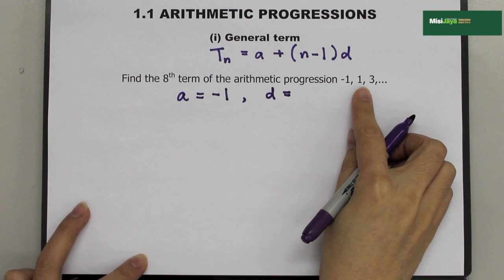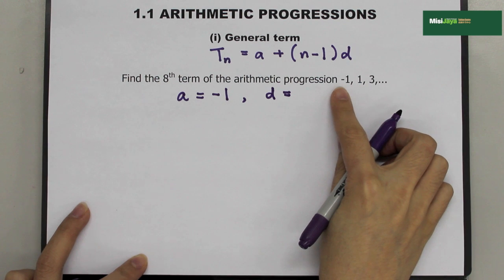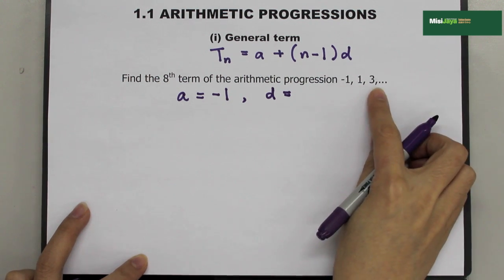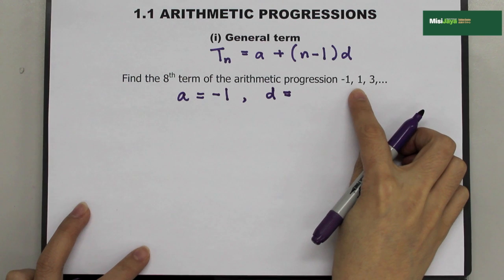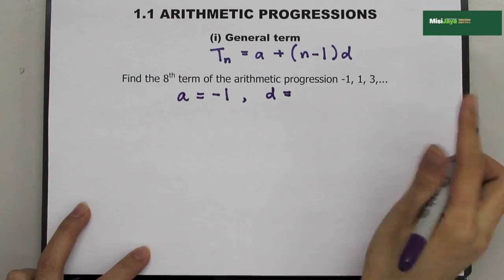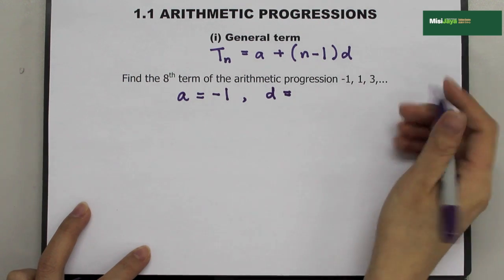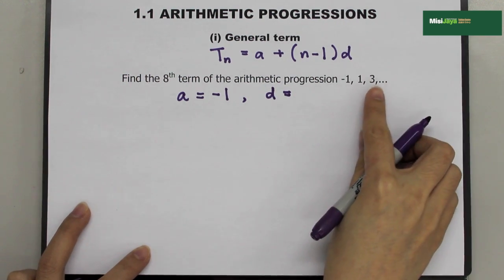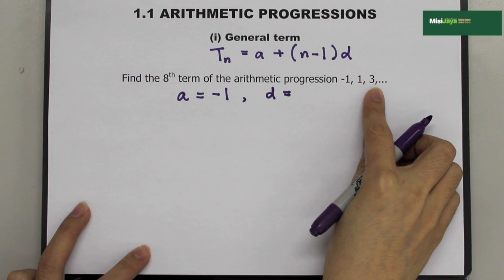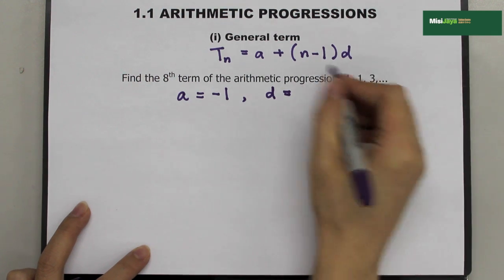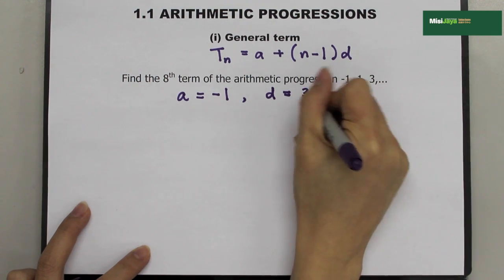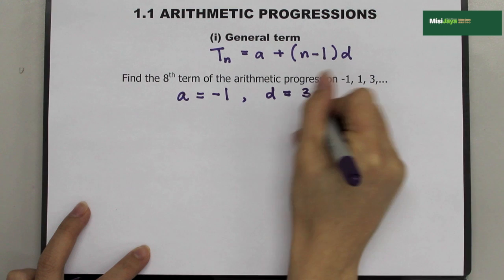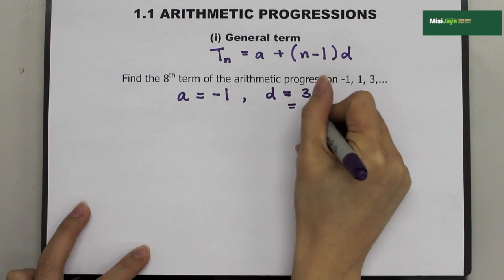We can use the second term minus the first term, or the third term minus the second term. To make it easy, I use the third term minus the second term, which is 2.